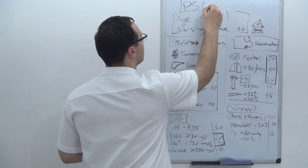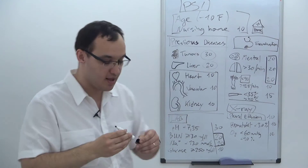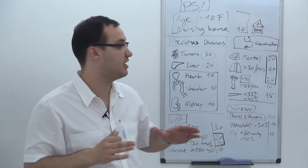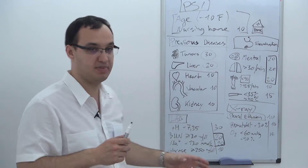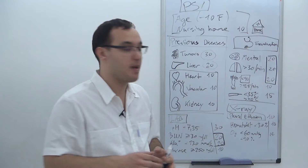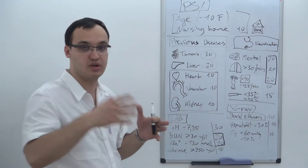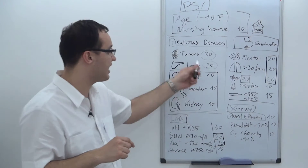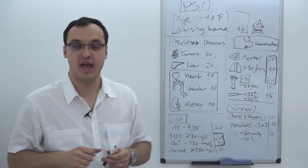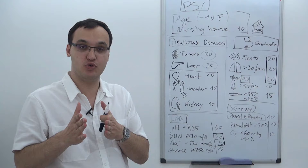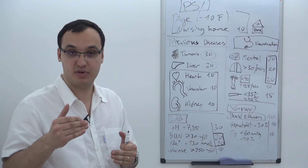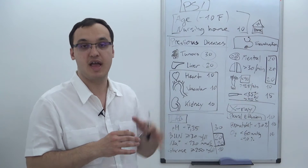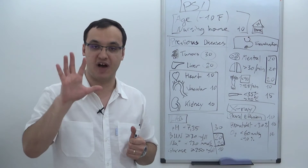The Pneumonia Severity Index is a score system that can help us decide whether the patient will be in the hospital or not. For this we need many criteria, but it looks more complicated than it is. You can find this calculator online and you just need to decide which criteria apply, and the calculator will then calculate the score for you. This will help in deciding whether the patient goes home or stays in the hospital. There is a scoring system where you can divide patients into five groups.